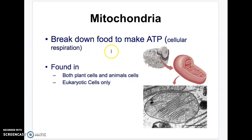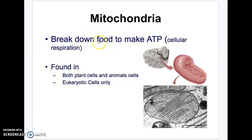Mitochondria breaks down food to make energy. Mitochondria does cellular respiration — it takes glucose and makes energy. The mighty mitochondria is only in eukaryotic cells, but both plants and animal cells have it.